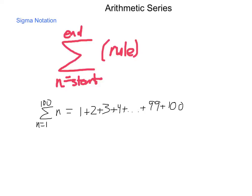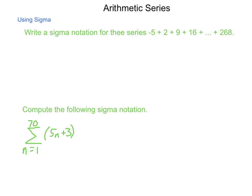Let's take a look at what this would appear. So write a sigma notation for the series negative 5, 2, 9, 16, adding all the way up to 268. So first, let's write the rule to generate the sequence. So a sub n equals a sub 1 plus d times n minus 1.